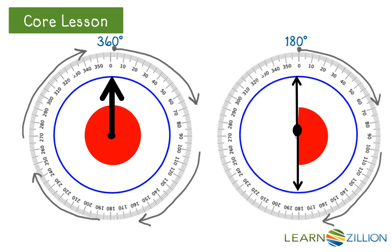If we rotate only halfway, the measure is half of 360, or 180 degrees. Let's look at a tool that shows us how a circle is divided into 360 sections. Mathematicians use a special symbol, a small circle, after a number to indicate the number of degrees.